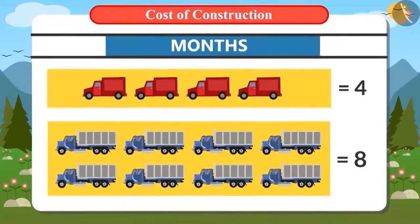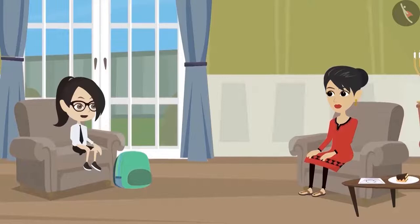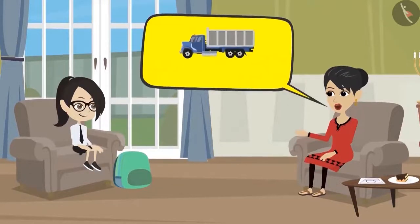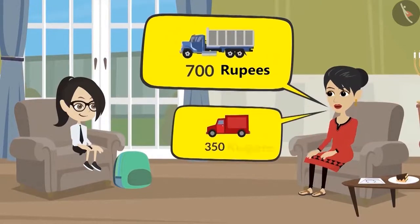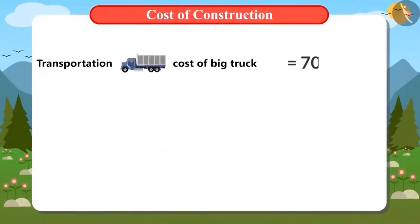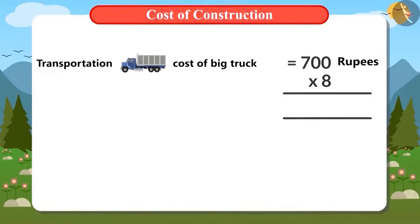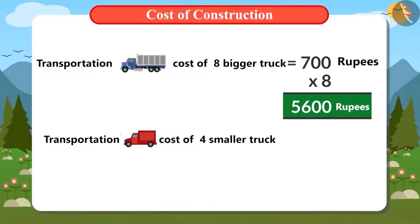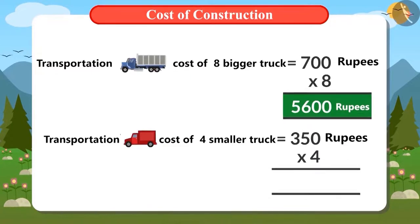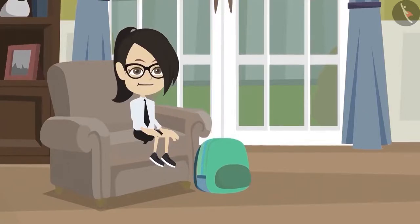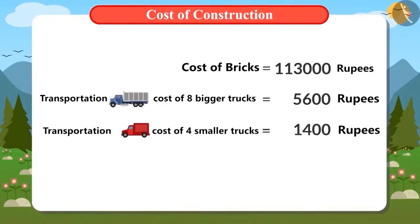Now let's calculate the cost of transportation. It costs 700 rupees to get bricks in a big truck and 350 rupees in a small truck. To bring bricks 8 times in a big truck: 700 multiplied by 8 equals 5,600 rupees. For 4 small trucks: 350 multiplied by 4 equals 1,400 rupees. Now all expenses related to bricks have been calculated — the value of the bricks and the cost of transporting them.